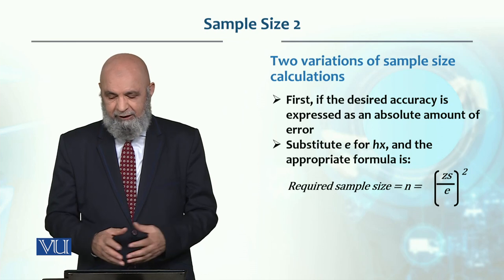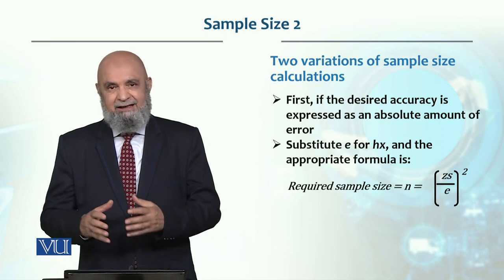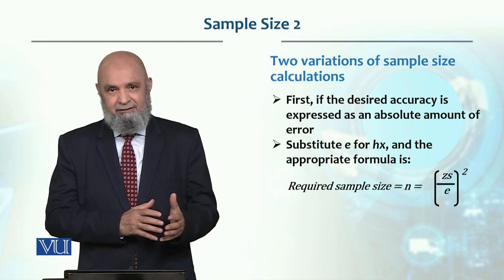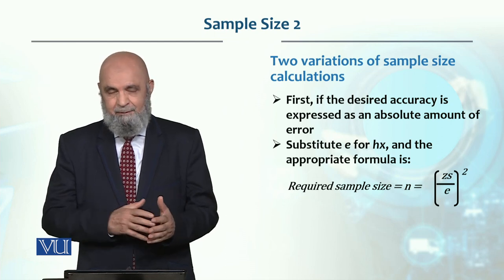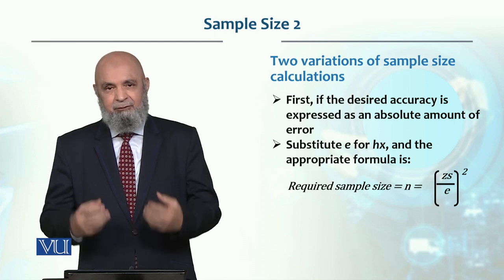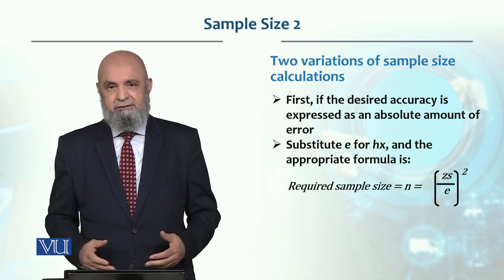So the formula will be Z, S - Z is confidence level related to Z, S is standard deviation divided by E, absolute error.